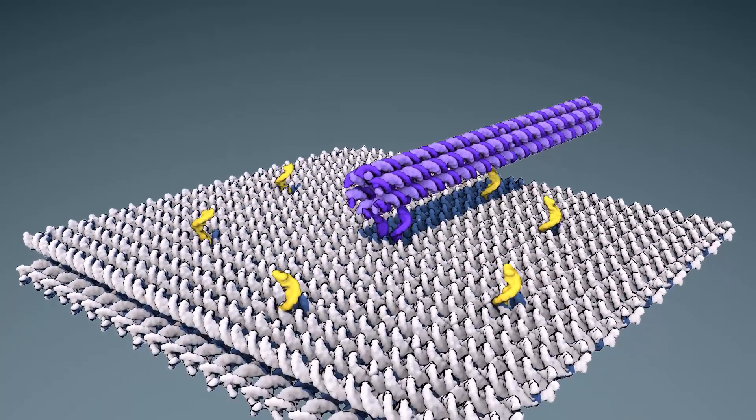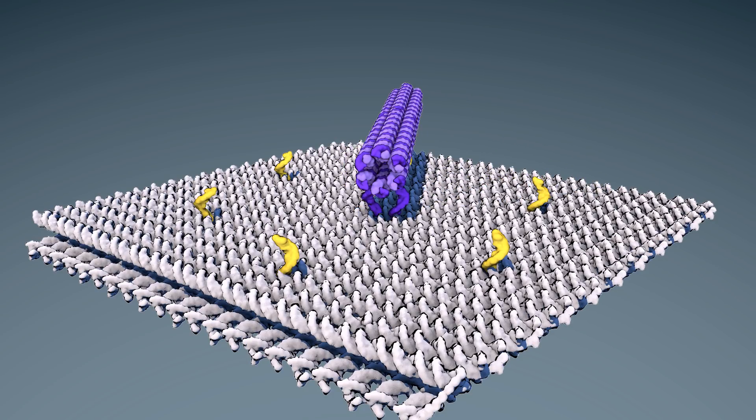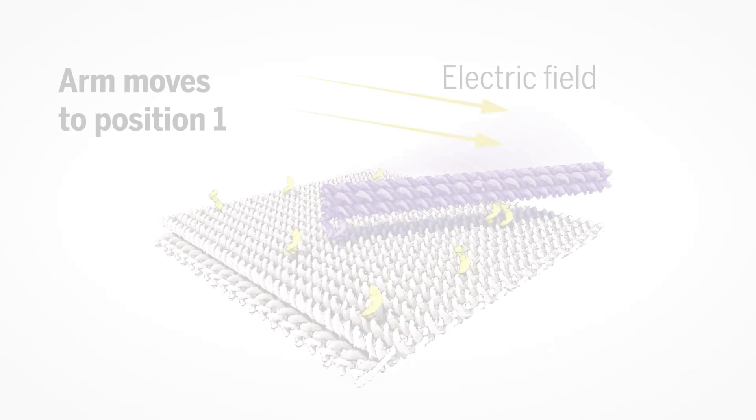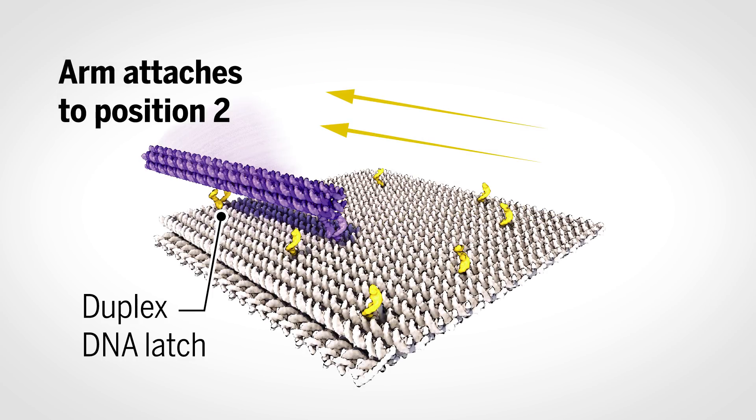In some experiments, the arm's movement was stopped short by DNA strands sticking up perpendicularly from the platform. The arm could only move if the charge was driving it to let go of these complementary strands, and then only to set positions.